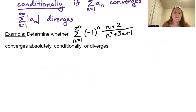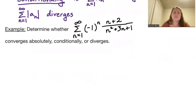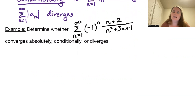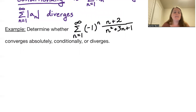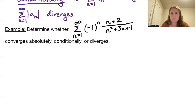For example, let's look at the alternating series: the sum from n equals 1 to infinity of negative 1 to the n, times n plus 2 over n squared plus 3n plus 1, and determine whether that series converges absolutely, conditionally, or diverges.